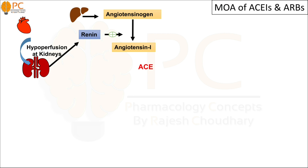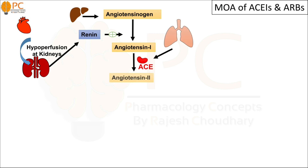An enzyme known as ACE — angiotensin converting enzyme — produced from the endothelial cells of the lungs, is responsible for the conversion of angiotensin 1 into angiotensin 2. Angiotensin 2 is the active peptide of the RAS system and causes various biological effects.